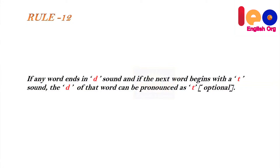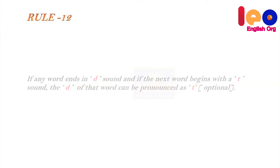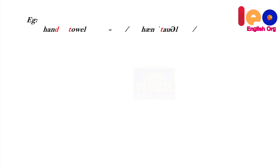This is optional — your wish. There is no compulsion. That is, when a word ends in 'd' and the next begins with 't', the 'd' may be pronounced as 't' based on your preference. Example: 'hand towel' — 'd' is the last letter of hand, 't' is the beginning of towel — this can be pronounced as 'han towel', skipping the 'd'.